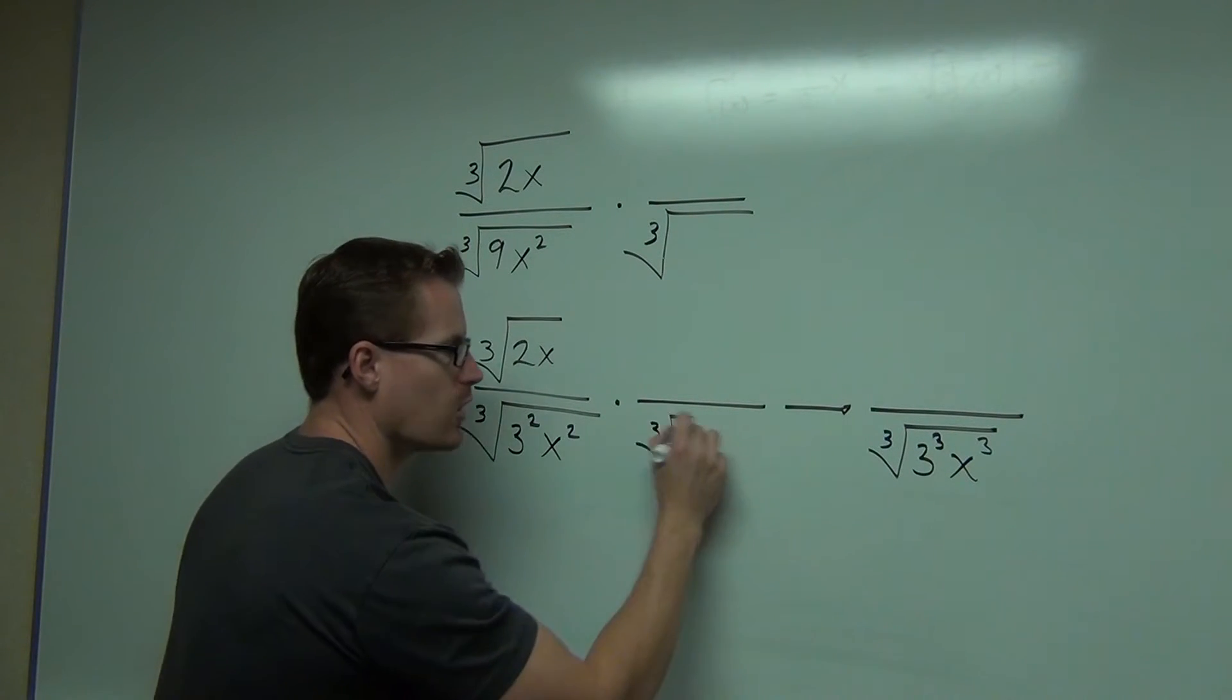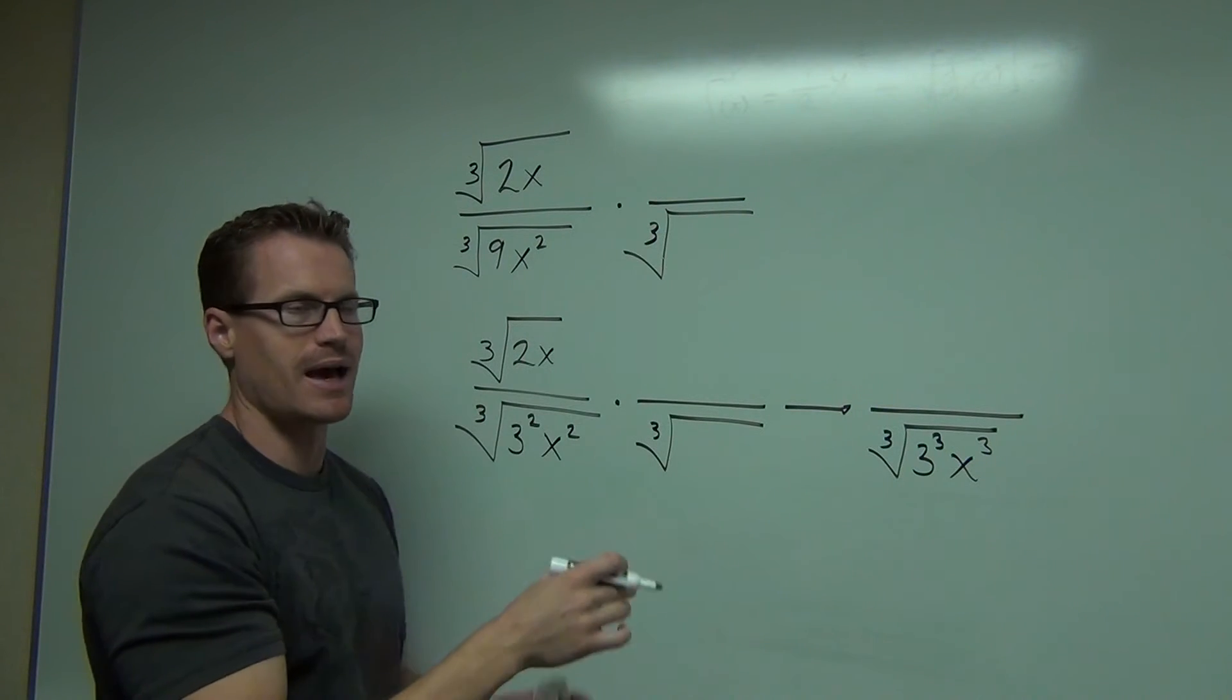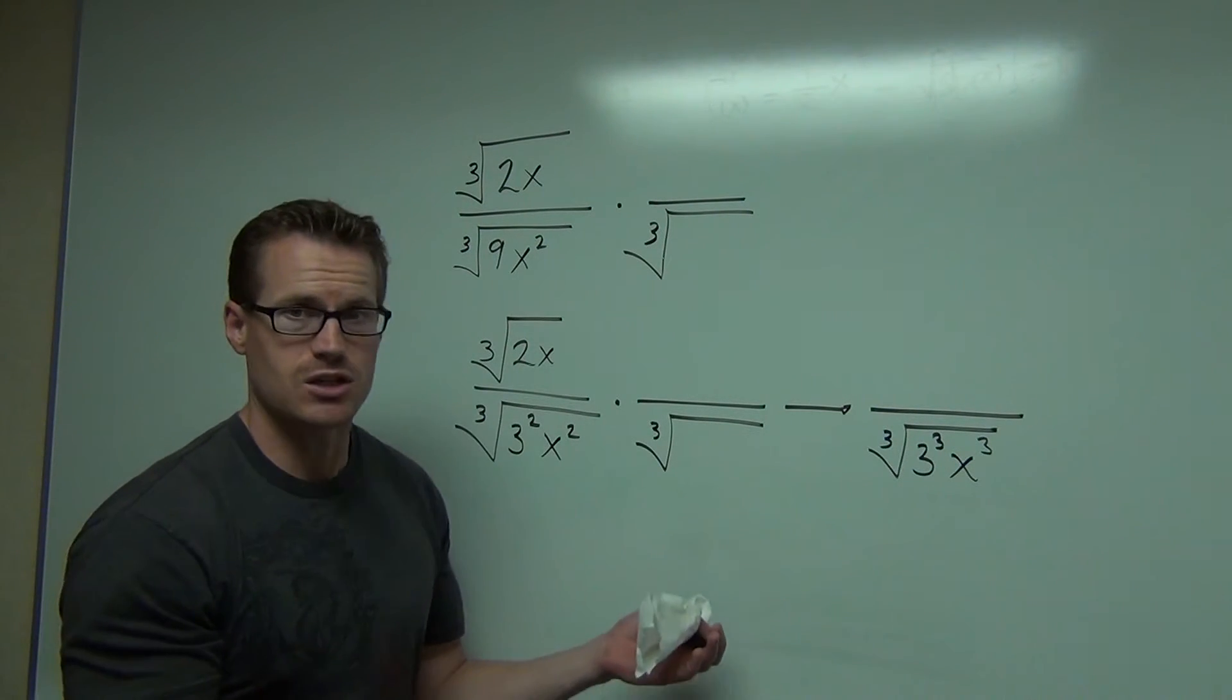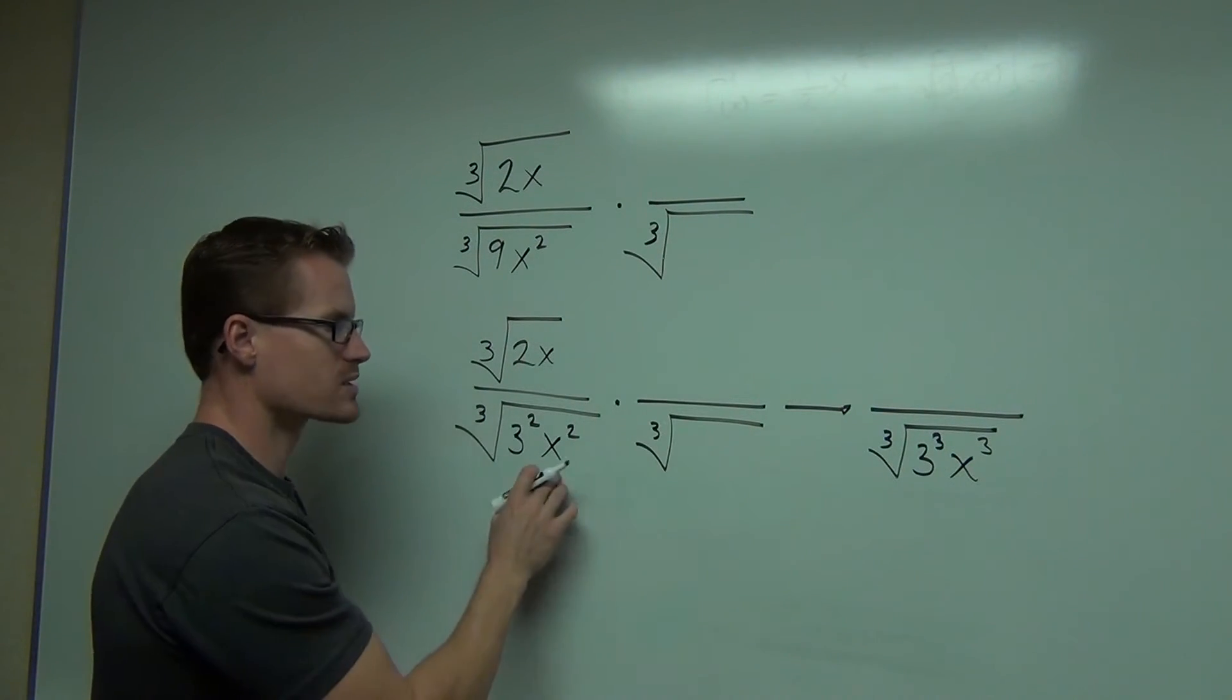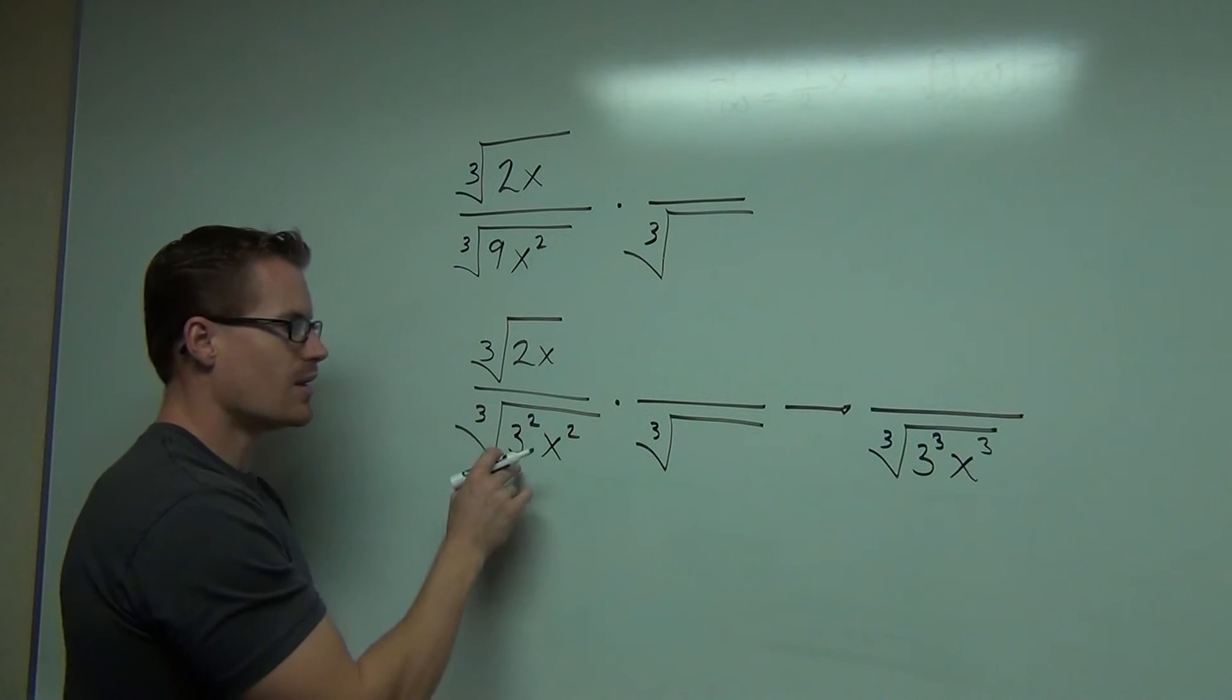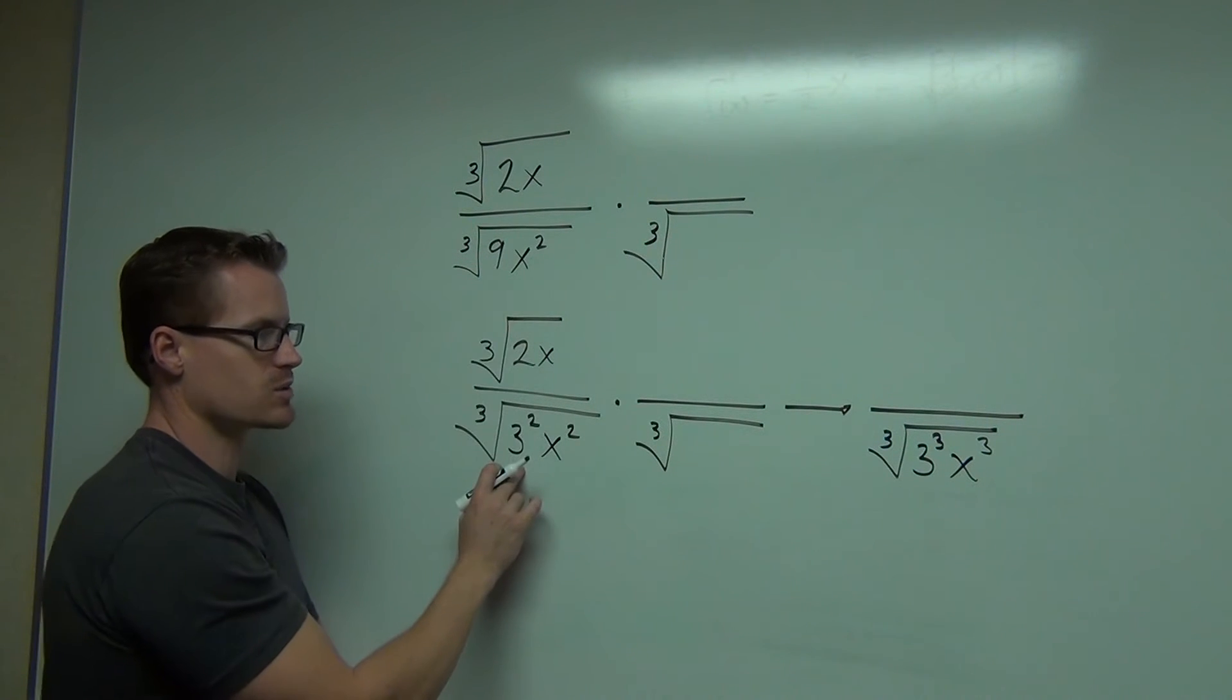So then you think about, instead of a large number like 81 making that—I don't even know what that is, it's a huge number. We don't even want something that big. We want something very simple that we can cross out. That's why we write this instead of 9 as 3 squared.